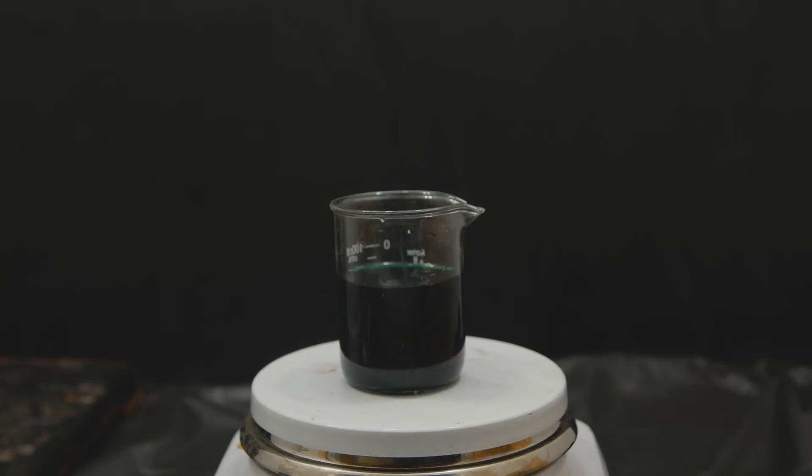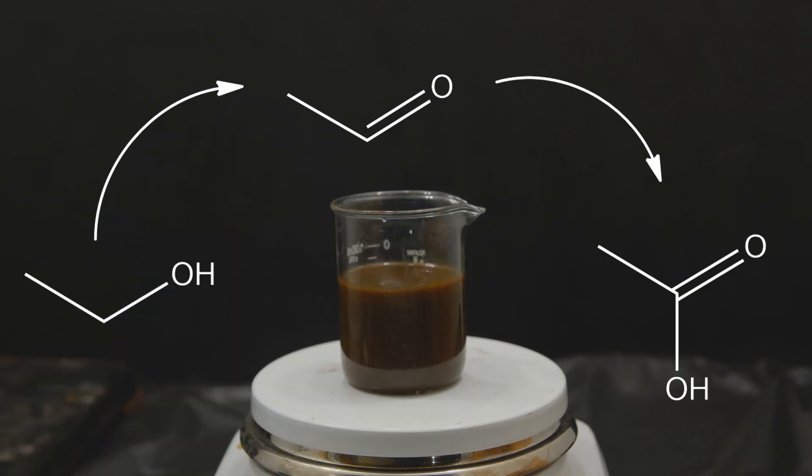Then with stirring we begin to add a stoichiometric amount of potassium permanganate. What's happening here is the potassium permanganate is oxidizing the alcohol to an aldehyde and then to a carboxylic acid which gives us vinegar.